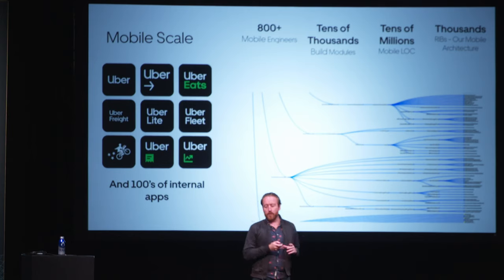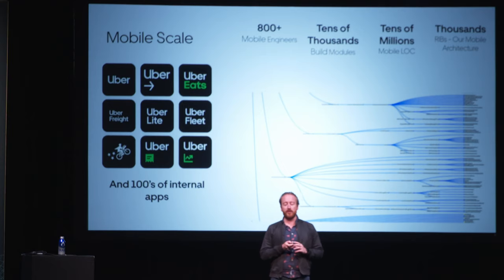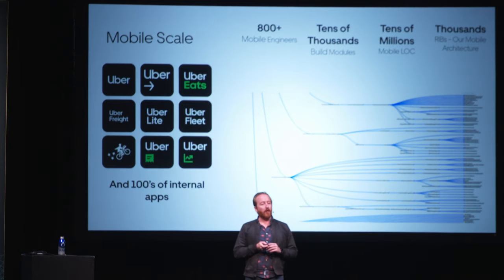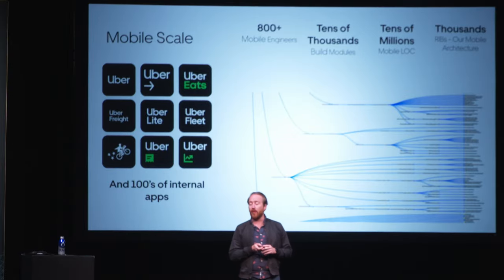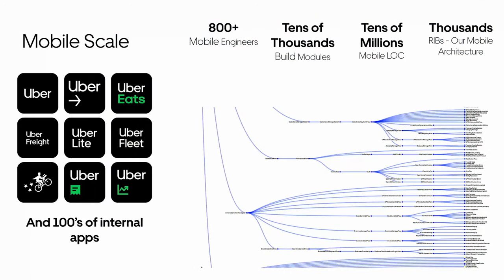I've been at Uber about seven years and I've seen this grow quite a bit. Right now Uber probably has around 800 mobile engineers. We measure this by monthly active contributors to our repos. We have tens of thousands of build modules, tens of millions of lines of code in Android. Our mobile architecture called RIBs, which is a Viper-like architecture, is used by all of our apps. Everything's built and converged, so we have thousands of architectural units in the code base, as well as many production apps and hundreds of internal apps.